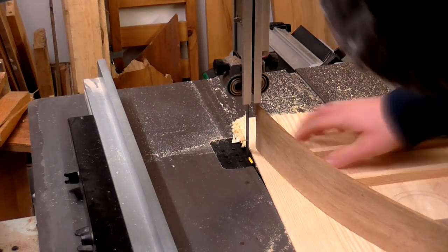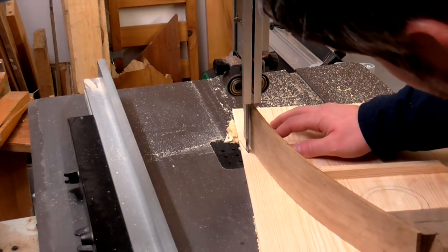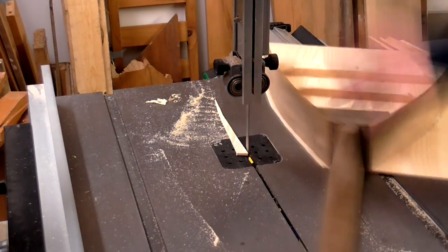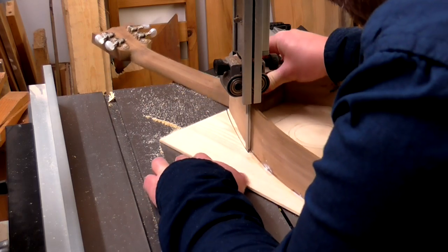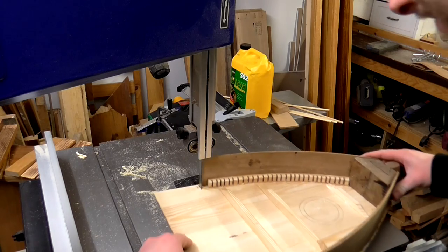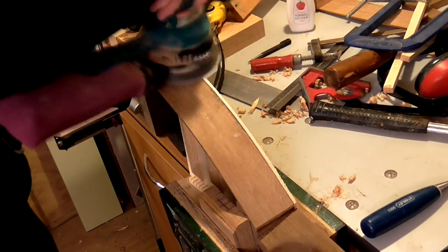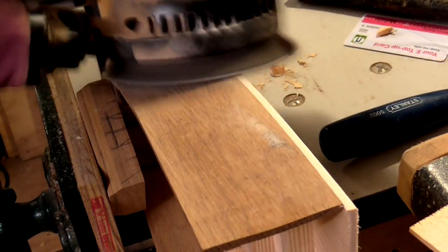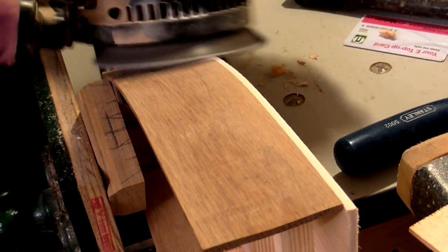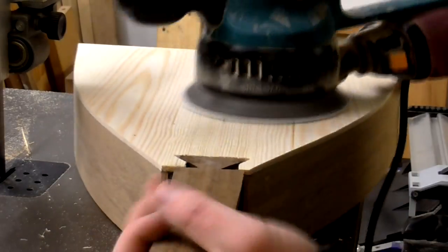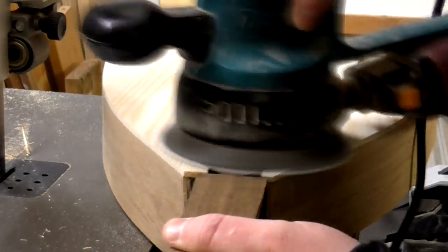When the glue had dried I could cut off some of the excess material from the soundboard on the bandsaw. Then I sanded it flush with the sides. Then I gave the front of the soundboard a sanding too.